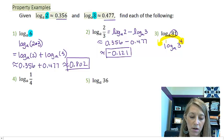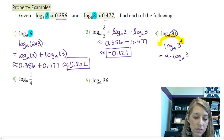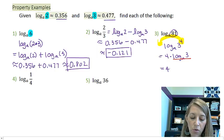And now I can use my power property rule, and I can say, hey, this power here can actually be moved down in front. And so this is 4 times log base A of 3.